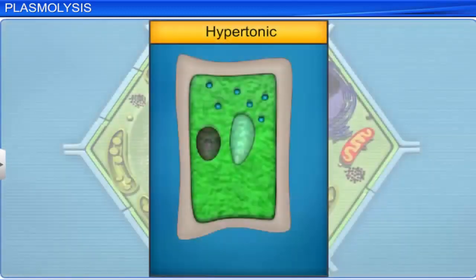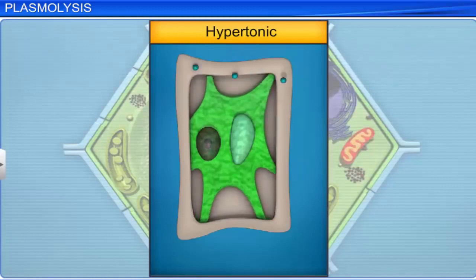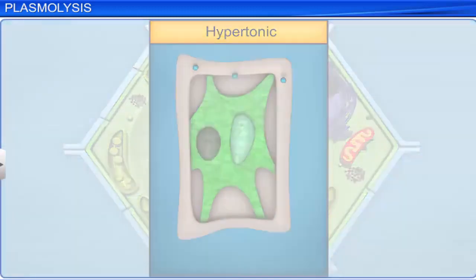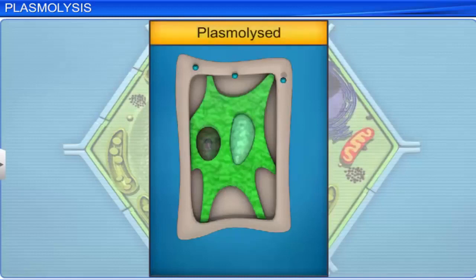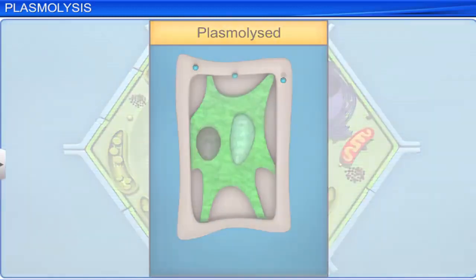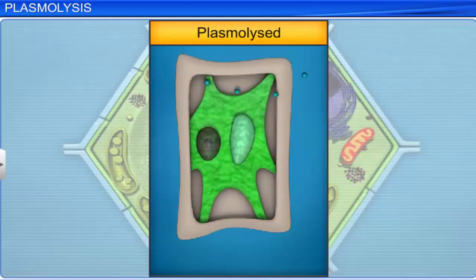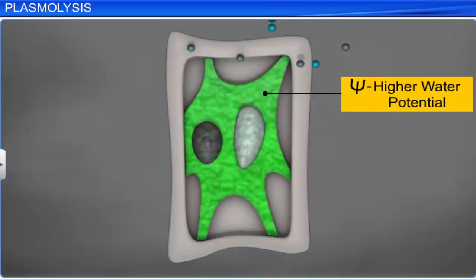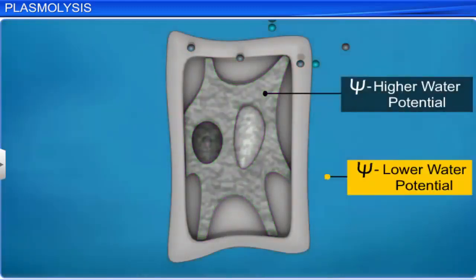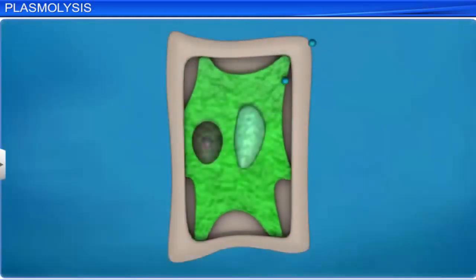If a plant cell is placed in a hypertonic solution, water moves out of the cell due to osmosis. The cell membrane shrinks away from the cell wall with this outward movement of water. This phenomenon is called plasmolysis, while the cell is said to be plasmolyzed. In plasmolysis, water first moves out of the cytoplasm and then the vacuole. This movement of water takes place from a cell which has higher water potential to an area outside the cell that has lower water potential. However, plasmolysis is a reversible process.